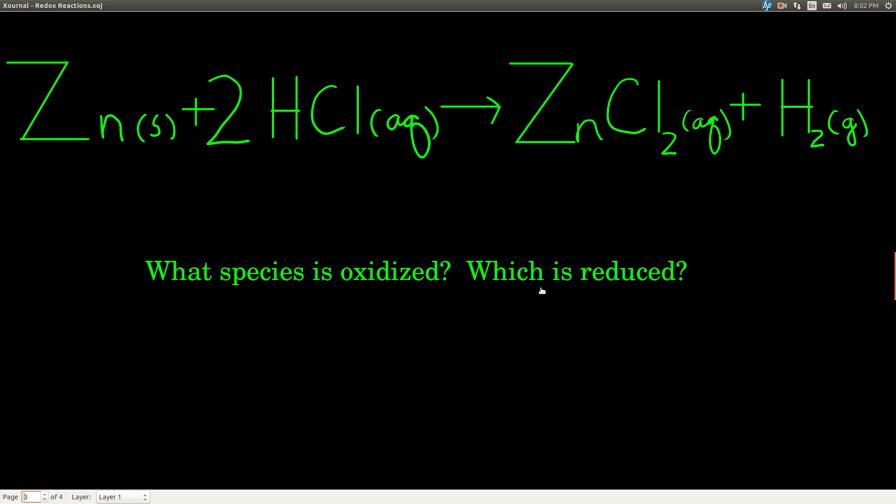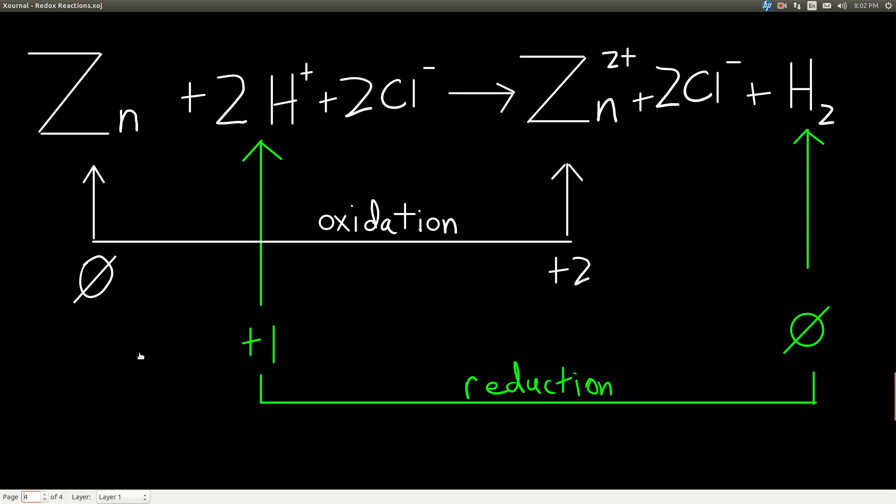So we want to find out what's oxidized and what's reduced. The simple way to do this is to take anything that's aqueous and write that down. If it's aqueous, and only if it's aqueous, break it apart into its ions, the cation and the anion. So hydrochloric acid will become H plus and Cl minus, and we have 2 here because we have 2 hydrochloric acids. And zinc chloride will become zinc with a positive 2 charge and 2 chloride ions. Make sure you understand where these came from.